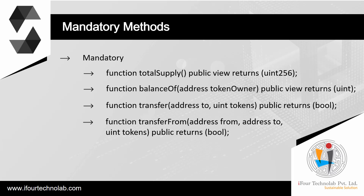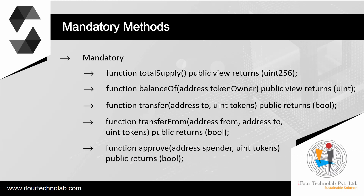The function `transferFrom(address from, address to, uint tokens) public returns (bool)` is required. The parameter `from` represents the address of the sender, `to` represents the address of the recipient, and `tokens` represents the amount of tokens to be transferred. The return value tells whether the transfer was successful. The function `approve(address spender, uint tokens) public returns (bool)` is also required. A sender can approve a delegated transfer that exceeds their actual token balance, because the transfer won't happen until transferFrom is called. Therefore all approvals can succeed, but the function is still required to return true.